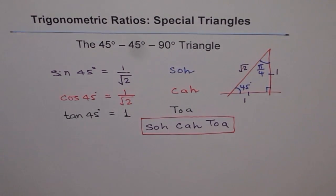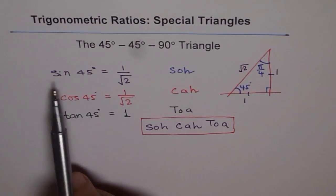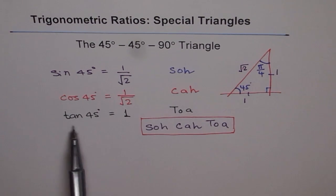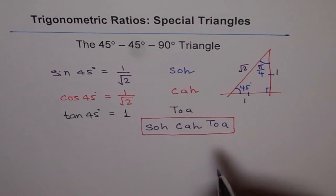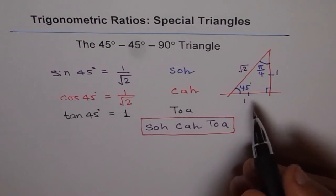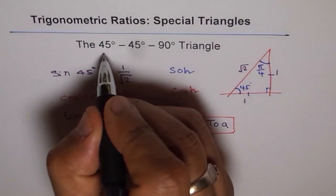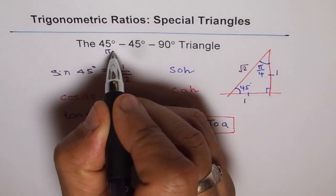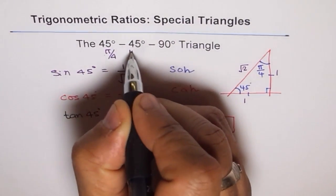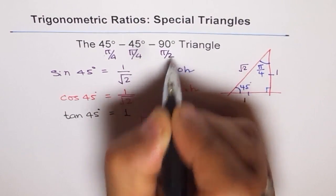This is one special triangle for you which gives you values for 45 degrees. You can find sin 45 degrees, cos 45 degrees, or tan 45 degrees from this triangle. Now those of you who are working in radians, what is 45 degrees? 45 degrees is pi by 4. Just write pi by 4 here, and 90 degrees is pi by 2.